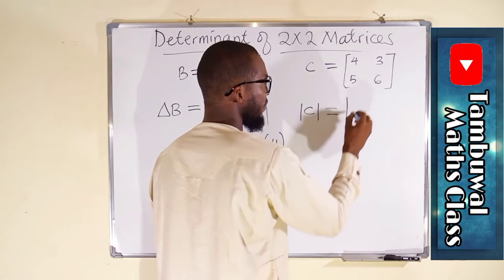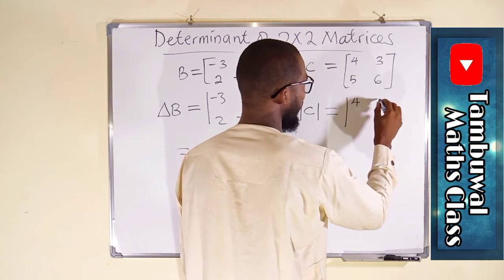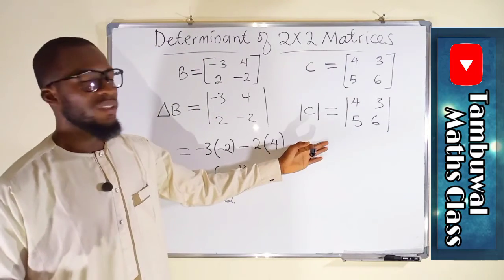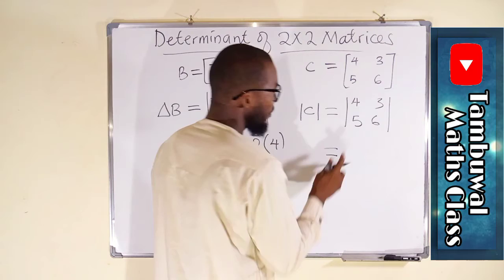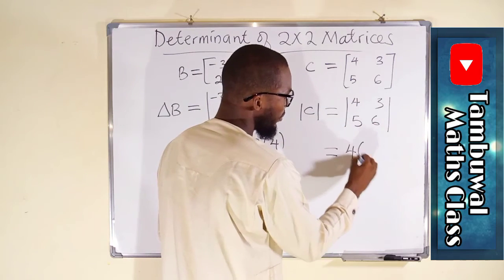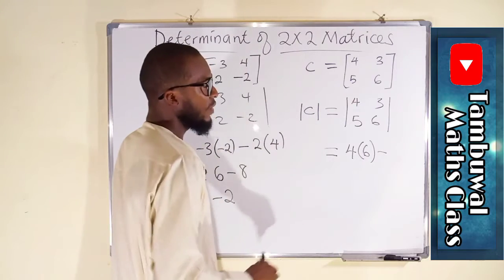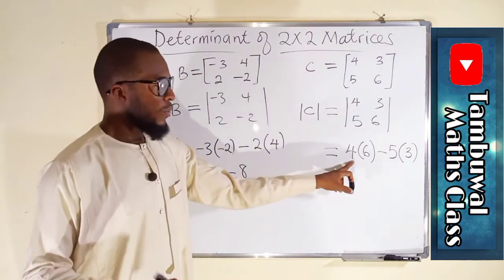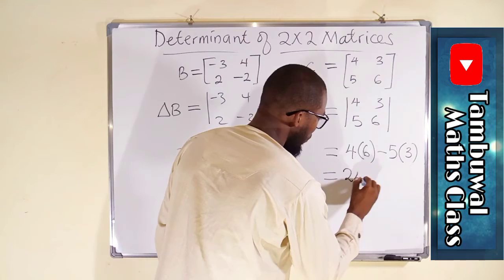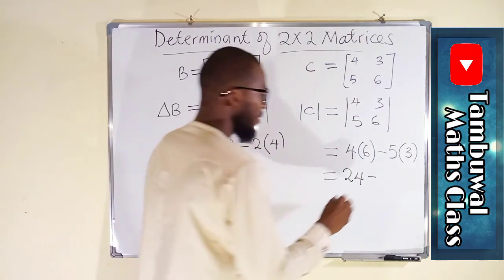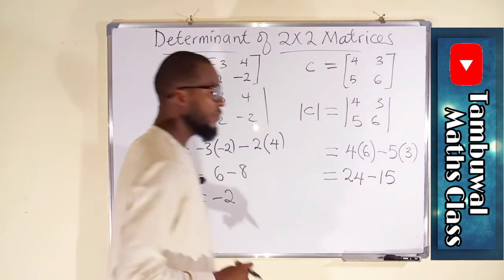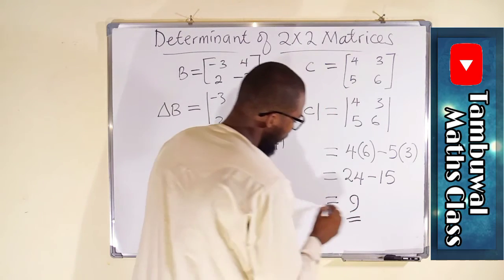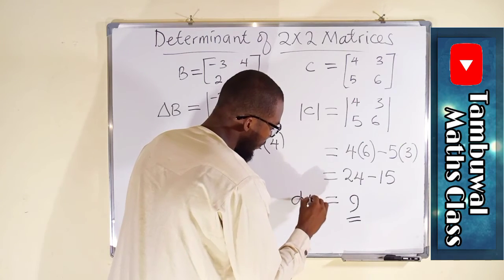It is the same thing as taking the difference of the product diagonally. So, this is how to represent it before simplifying. Again, this becomes 4 multiplied by 6. We have 4 multiplied by 6. You take the difference, 5 multiplied by 3, 5 multiplied by 3. And then, 4 times 6 is 24 minus 5 times 3 is 15. 24 minus 15 is equal to 9. And 9 is said to be the determinant of matrix C.